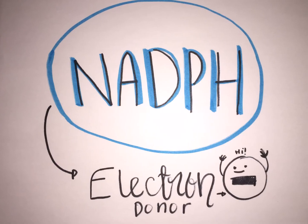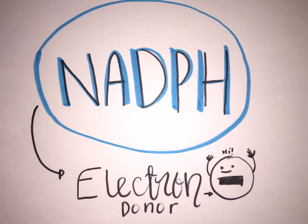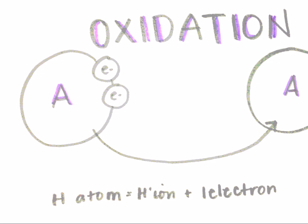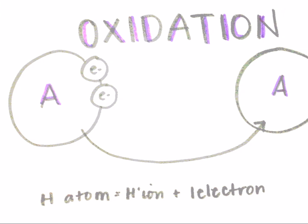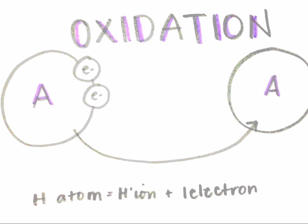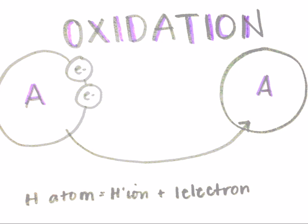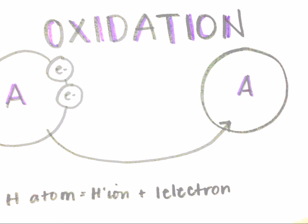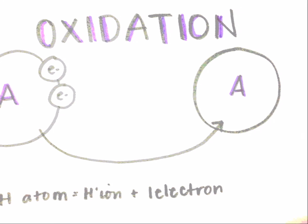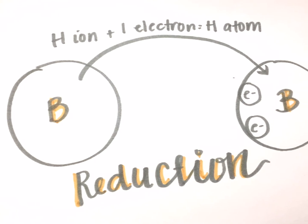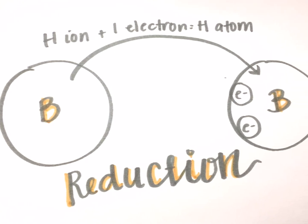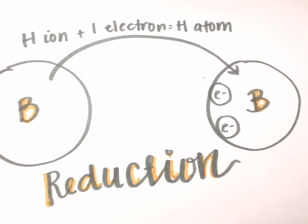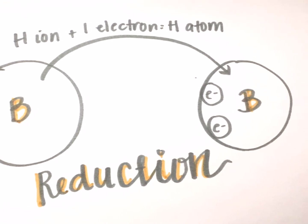NADPH, which is nicotinamide adenine dinucleotide phosphate, is an electron donor involved in energy transfers. Oxidation is a reaction in which an atom or molecule loses electrons, mathematically equated as: 1 hydrogen atom = 1 hydrogen ion + 1 electron. Reduction is a reaction in which an atom or molecule gains electrons, mathematically equated as: 1 hydrogen ion + 1 electron = 1 hydrogen atom.